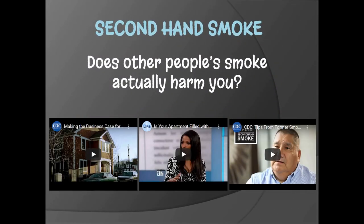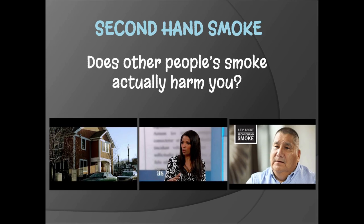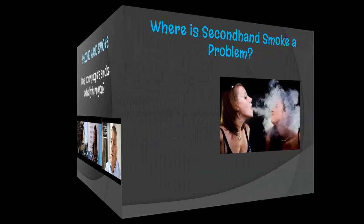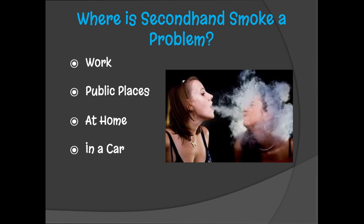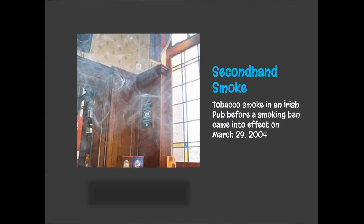Secondhand smoke: does other people's smoke actually harm you? When you go through this presentation on your own, I'd like you to open up three videos from the CDC and doctors to get more insight on secondhand smoke. Where is secondhand smoke a problem? Some workplaces allow smoking inside, as well as public places, at home, in the car — anywhere you're around someone smoking can be a risk to you. In indoor pubs and bars, secondhand smoke just lingers and doesn't escape the air ventilation systems very well. Thankfully, a lot of places have put smoking bans in effect indoors, but certainly not all of them.